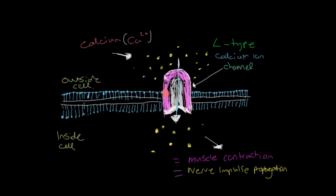For smooth muscle and cardiac tissue, this channel is called an L-type calcium ion channel, and is distinct from the other types of calcium channel in skeletal muscle, for example.